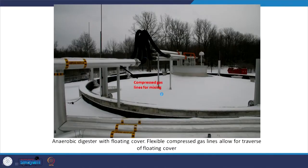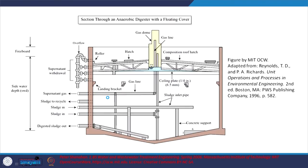Let us look at one anaerobic digester here — it is a floating cover type that can move up and down. They have compressed gas lines for mixing. This is the anaerobic digester and it is underneath the ground. Cross-section provided by MIT OpenCourseWare from Reynolds' book. Sludge comes in via sludge inlet pipes — that is one aspect to keep in mind.